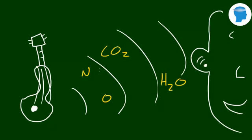So basically, when a guitar plays, these strings are going to vibrate back and forth and push against these particles in the air. Now, these particles don't go flying into your head — they just bump into the particles next to them, and those bump into the particles next to them, and they eventually cause this ripple of air particles, and these molecules eventually reach your ear. Whenever it gets to your ear, that's more biology and chemistry and less physics, but your nerve signals in your ear are going to notice the vibration, and your brain's going to interpret it and understand that as sound.